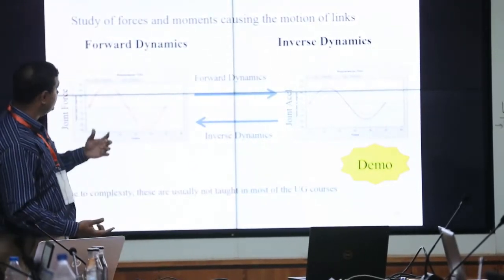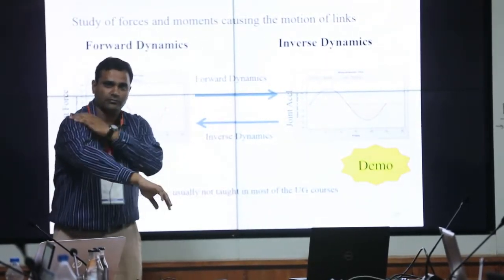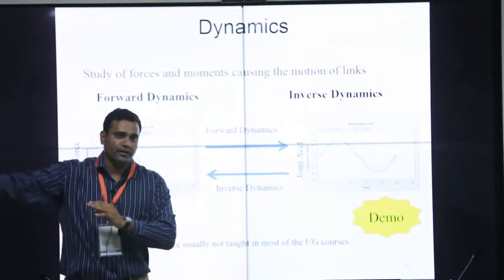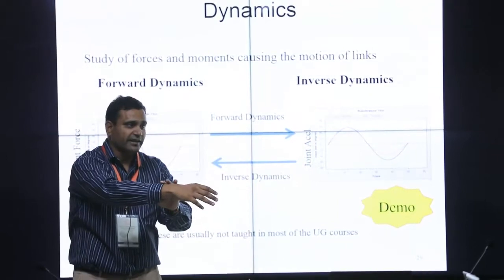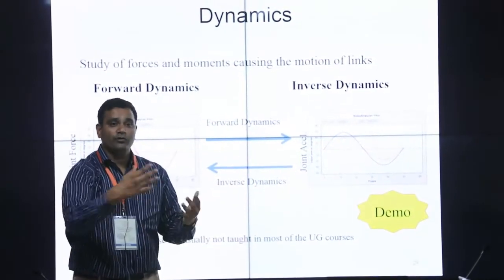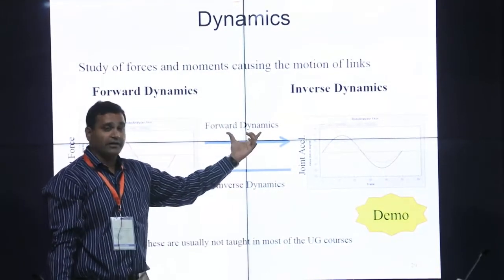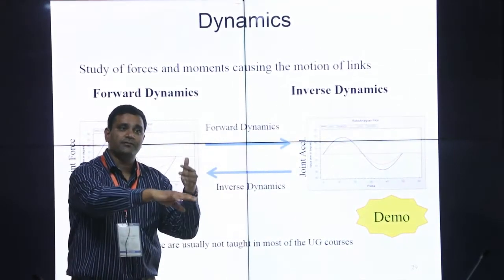The other way - if I know what torque I am putting, right, current I am passing through, which will be converted to torque, which is trying to move the robot like this. If I pass sudden torque inside my motors, how will my robot behave? That is nothing but forward dynamics - if I am applying forces on the robot and applying torque.